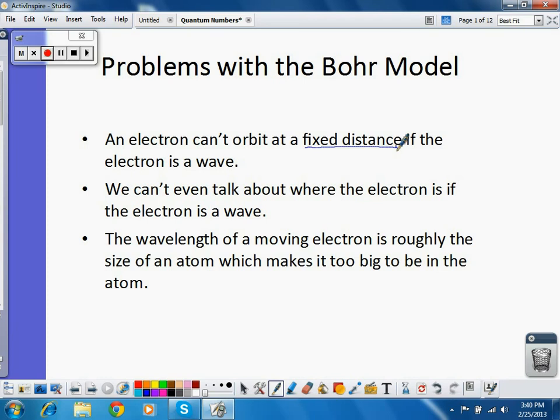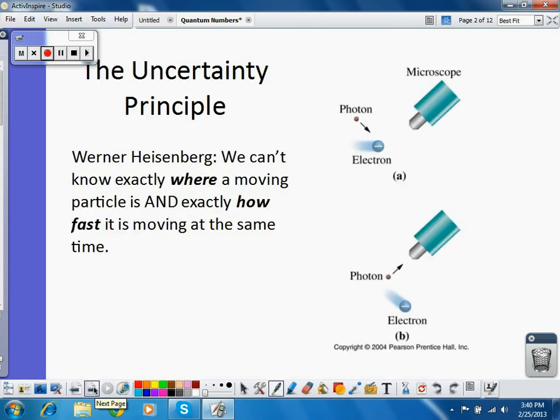So to get to the current view of the atom that we have now, we need to look a little further at the physicists that explored this. One of those physicists was Heisenberg, and he came up with the uncertainty principle. And what he said was we can't know exactly where a moving particle, such as along the size of an electron, not the size of a rock or even a grain of sand, but something along the size of an electron, we can't know exactly where that particle is and how fast it's moving at the same time.